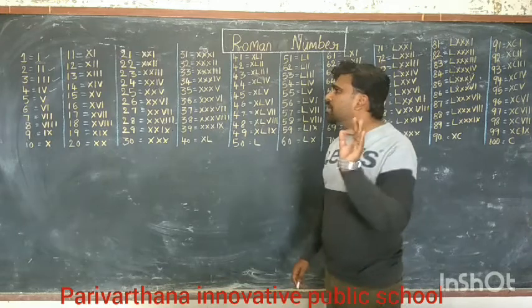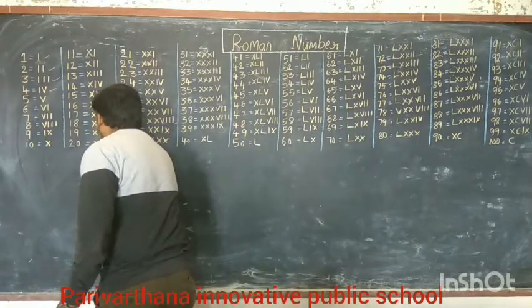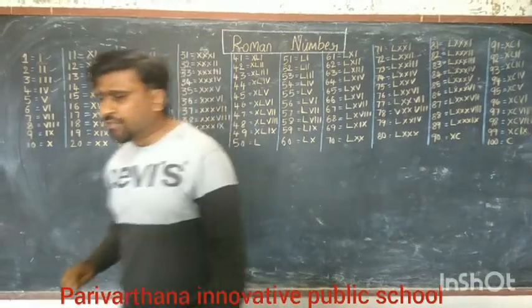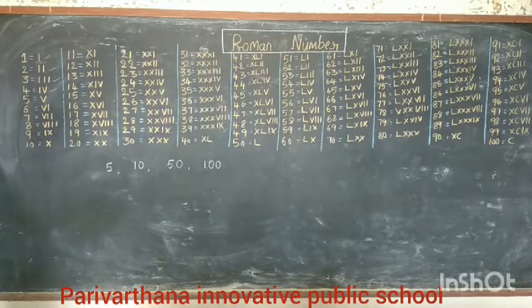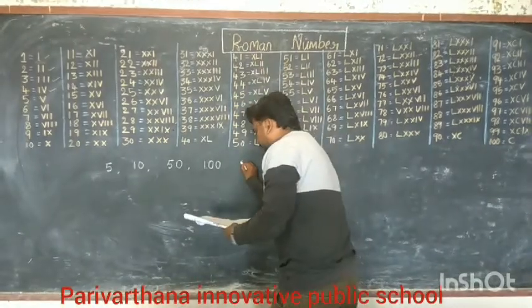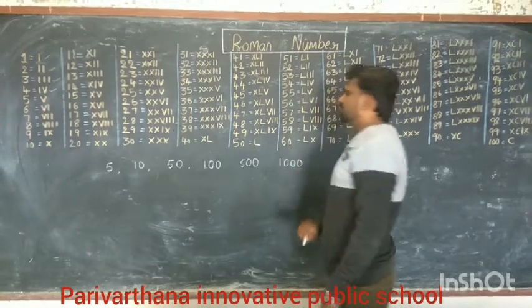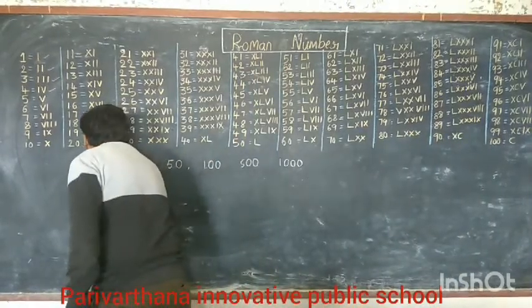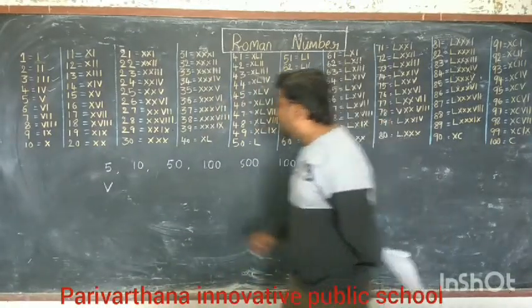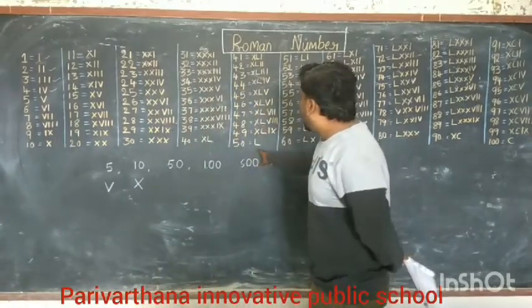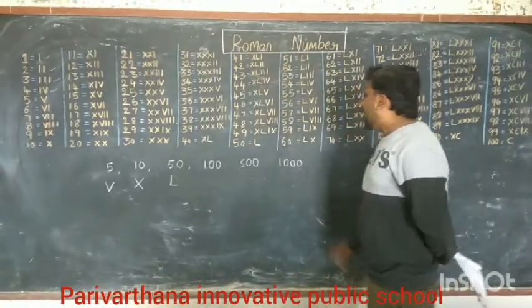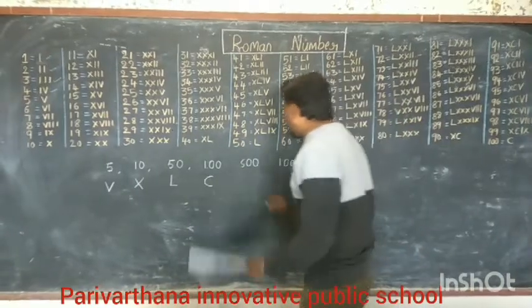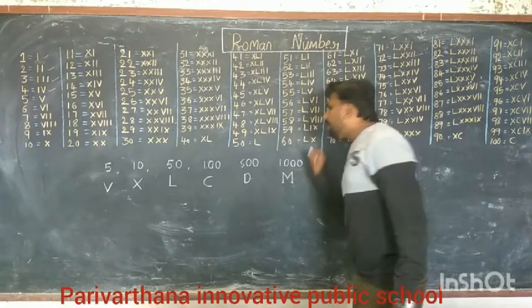Regarding Roman numbers, the main concept to remember is: 5 is represented by V, 10 by X, 50 by L, 100 by C, 500 by D, and 1000 by M. These are the key symbols you must remember.